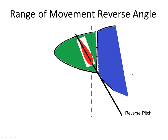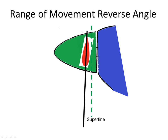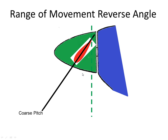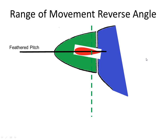The propeller will go from reverse pitch where the angle is negative, to superfine where it is slightly positive. The fine pitch is more positive, the coarse pitch even more positive still, right up to the feathered pitch which is at approximately 90 degrees to the plane of rotation.